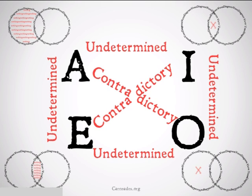This may seem like a pretty simple and uninteresting square of opposition. It's useful, maybe, for us to remember which statements are contradictory. It's going to be much more useful when we see the traditional square of opposition and see that instead of being undetermined, a lot of these relationships are going to be much more interesting. But we'll get to that in a bit.